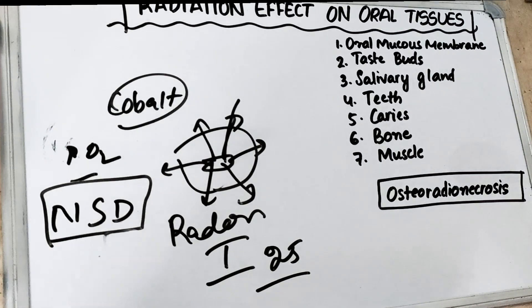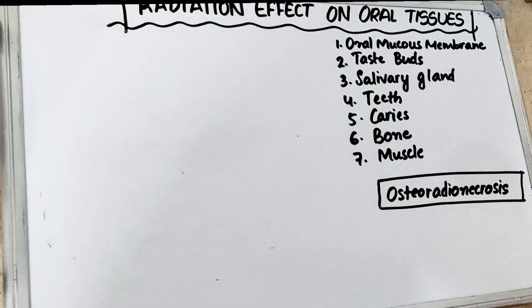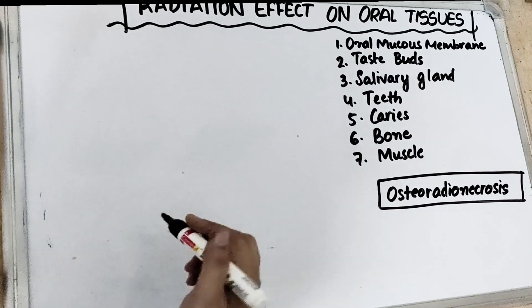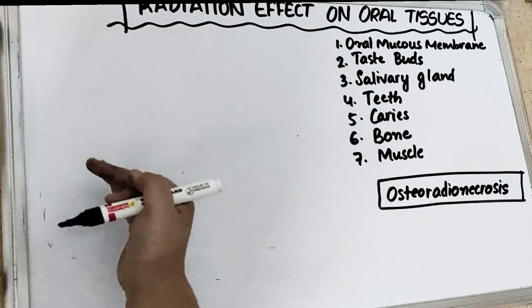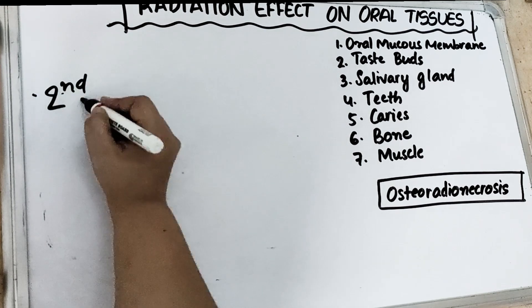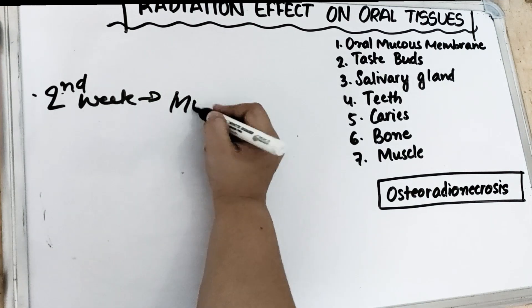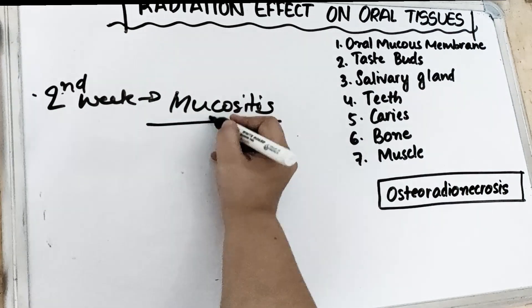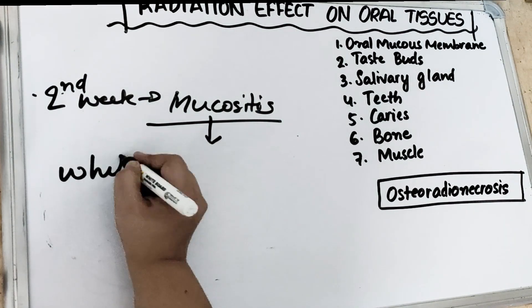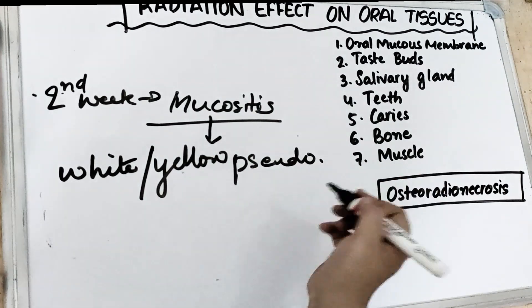Now, what are the after-effects of radiation therapy? Regarding the oral mucous membrane, the basal layer is the most radiosensitive — vegetative cells are the most radiosensitive, and the second most are the differentiating intermitotic cells. By the end of the second week, there is beginning of redness and inflammation — the patient develops mucositis. After the second week, a white to yellow pseudomembrane forms.